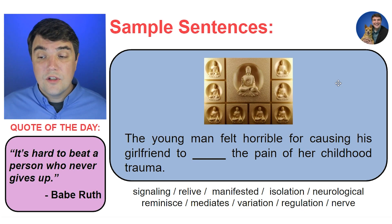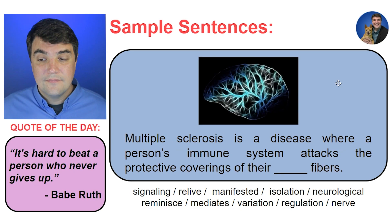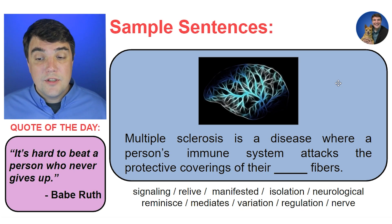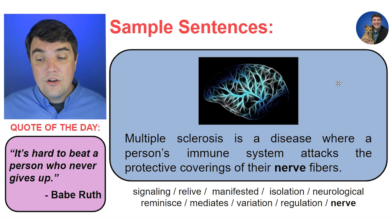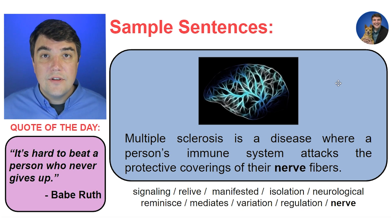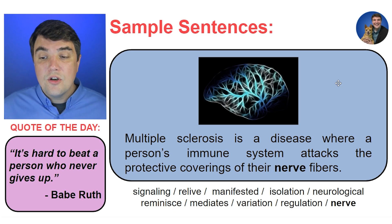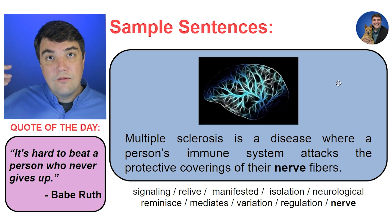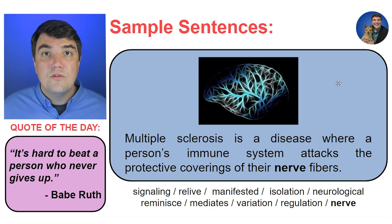The young man felt horrible for causing his girlfriend to relive the pain of her childhood trauma. Multiple sclerosis is a disease where a person's immune system attacks the protective coverings of their nerve fibers. A nerve is a special type of cell in your body that communicates using electrical signals. You have neurons in your brain and nerve cells that go from your brain to the rest of your body to get input and so that you can send output to move around.